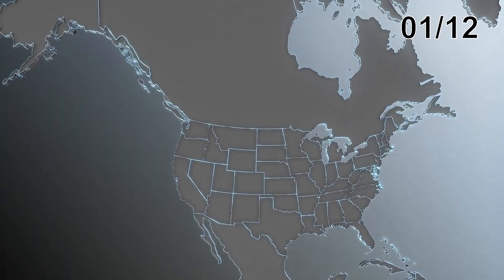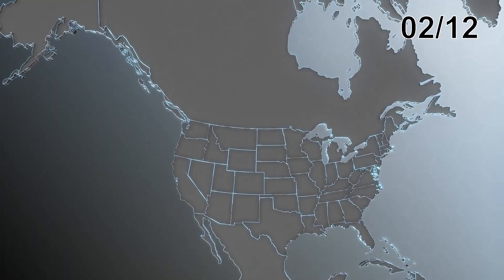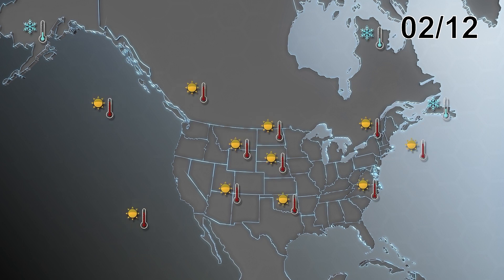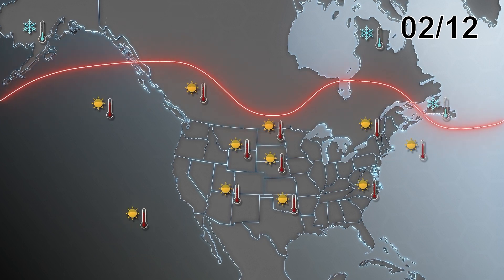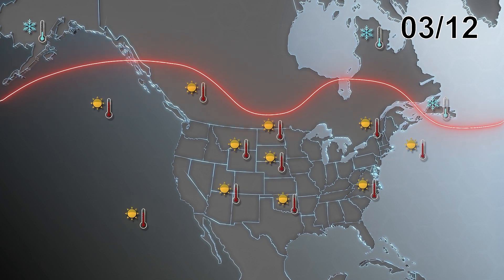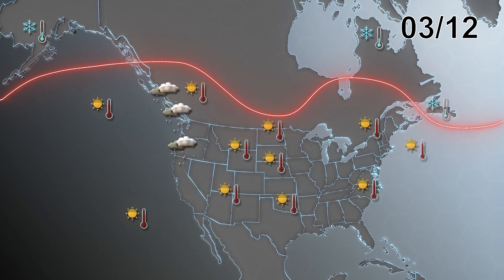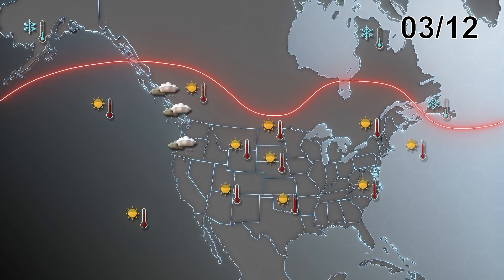Before this sudden sea change, the lower 48 states had been experiencing record-breaking heat for November and December, while the Pacific Northwest and British Columbia had also been experiencing record-breaking autumn rainfall on top of unseasonably high temperatures.